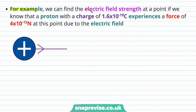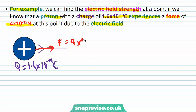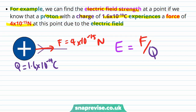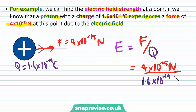For example, we can find the electric field strength at a point if we know that a proton with a charge of 1.6 times 10 to the minus 19 coulombs experiences a force of 4 times 10 to the minus 15 newtons. We want to find the electric field strength E, and we know that this is equal to F divided by Q. Substituting in the values, the force is 4 times 10 to the minus 15 newtons and the charge is 1.6 times 10 to the minus 19 coulombs. Therefore the electric field strength is equal to 25,000 newtons per coulomb.